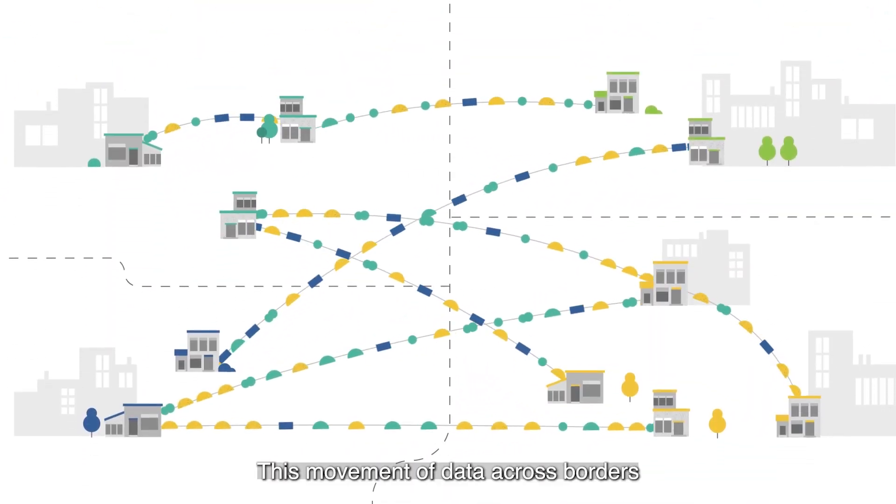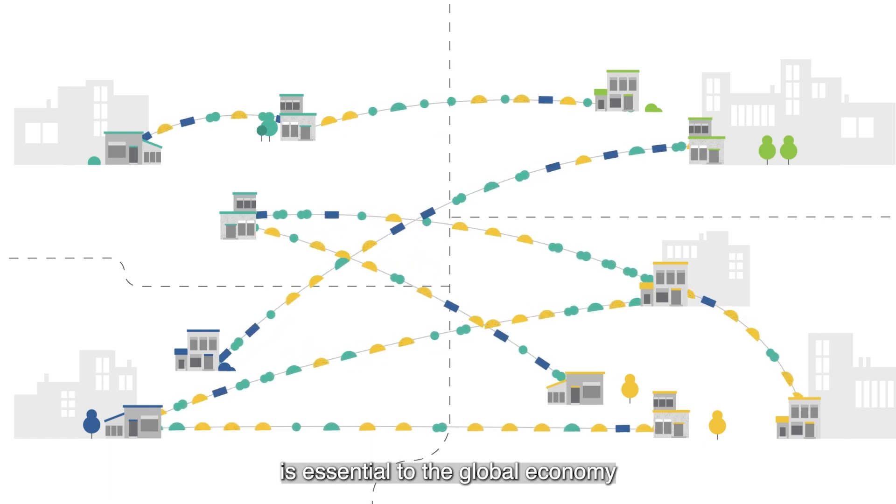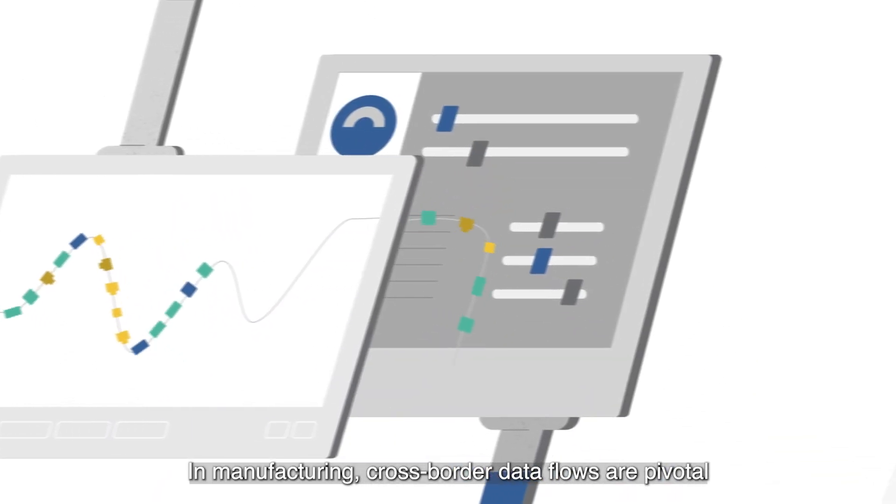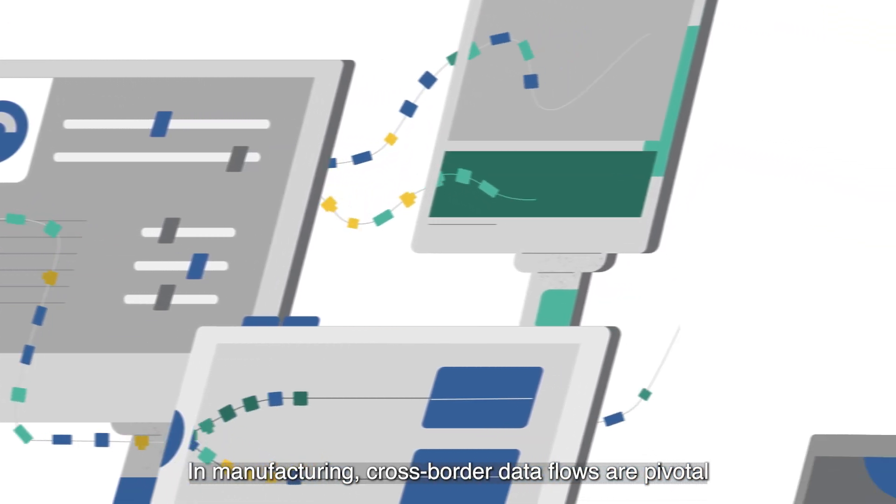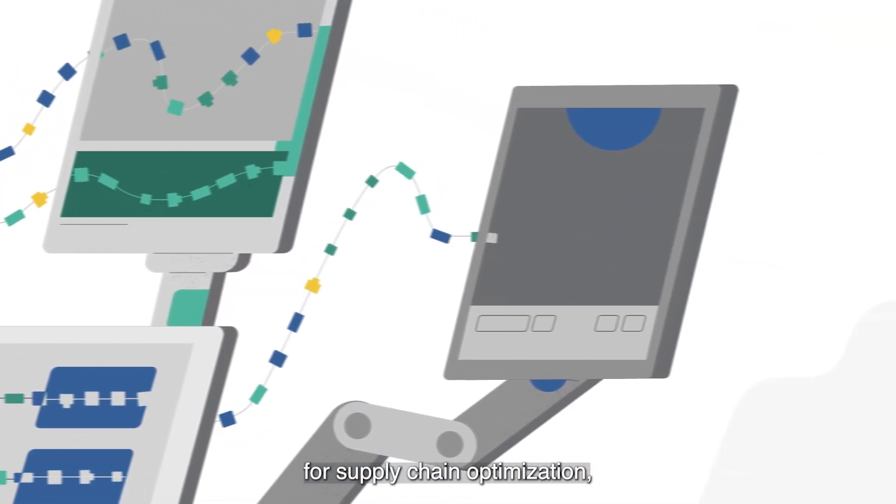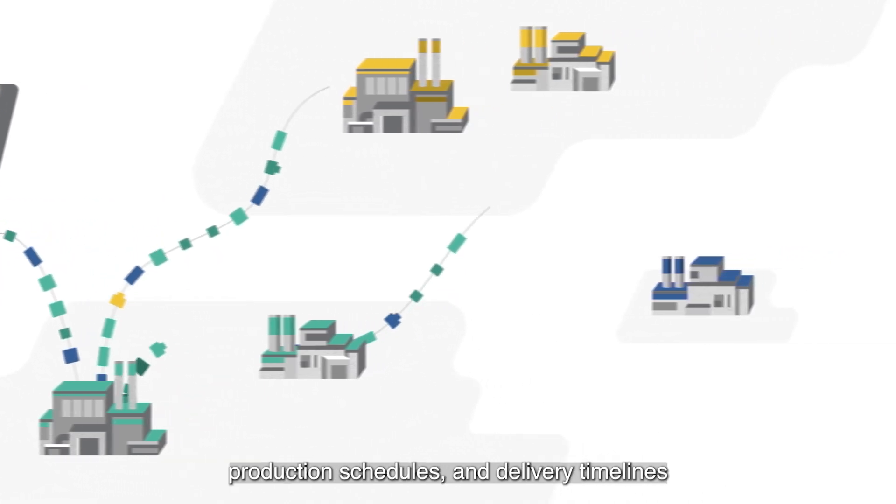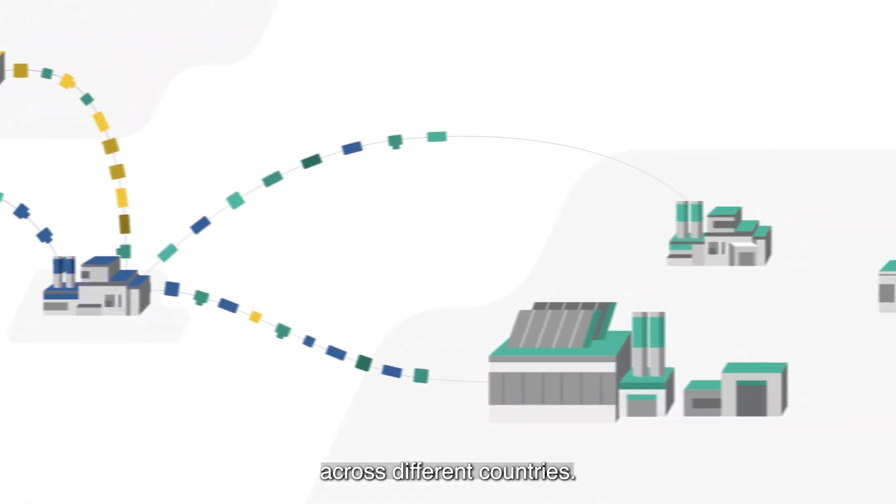This movement of data across borders is essential to the global economy and the functioning of many sectors. In manufacturing, cross-border data flows are pivotal for supply chain optimization, enabling companies to track and manage inventory levels, production schedules and delivery timelines across different countries.